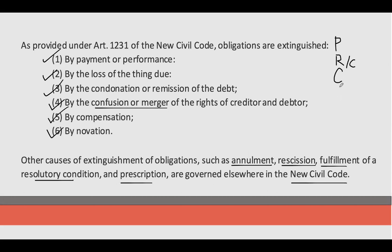We have here R, which is Rescission. Pag sinabing rescission, ibabalik na lang sa dating status. So yung naibayad ko sa'yo, since hindi mo naman na-deliver sa akin yung binibenta mo, then ibalik mo na lang yung ibinayad ko sa'yo. Or since nag-deliver ka na sa akin at hindi pa ako makakapagbayad sa'yo, rescind na lang natin para ma-extinguish yung obligation, para mawalan na ako ng obligation magbayad sa'yo. Ibalik ko na lang yung na-deliver mo sa akin. That's rescission — go back to the former status.